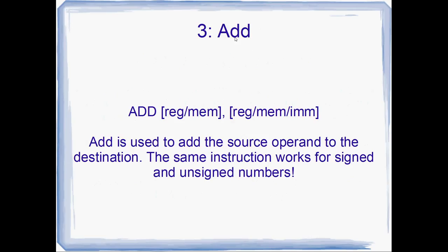Number 3: ADD. You're not going to get very far without adding variables at some point, so you'd better learn the ADD instruction. ADD is used to add the source operand to the destination and store the result in that first operand. It works for signed and unsigned numbers equally well — once again, that's due to the clever system called two's complement.